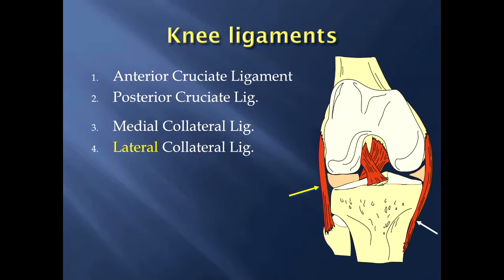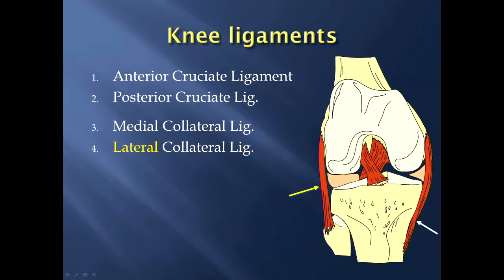The other pair of ligaments are the medial and lateral collateral ligaments, and they're named for the side of the knee that they're on — obviously the medial collateral ligament over here, and the lateral collateral ligament, which attaches to the head of the fibula.